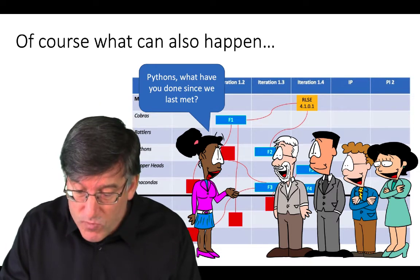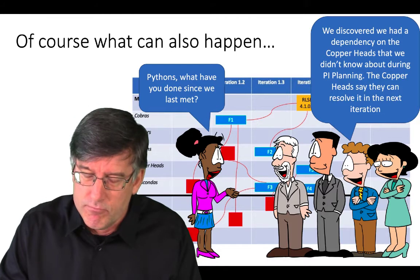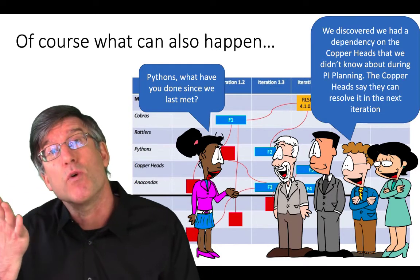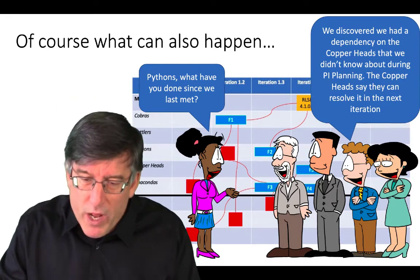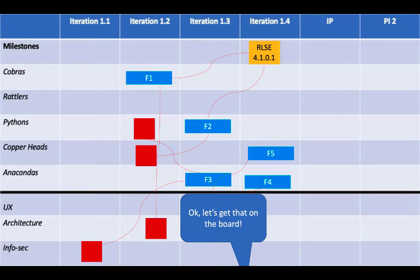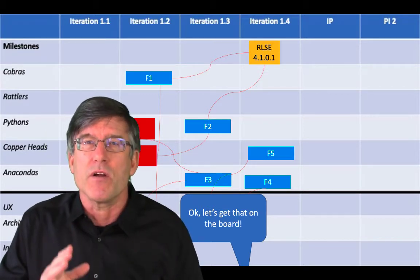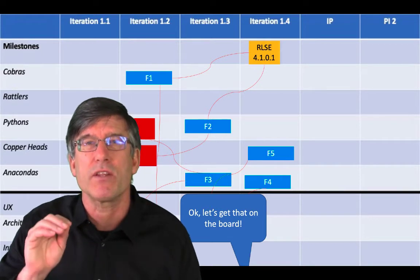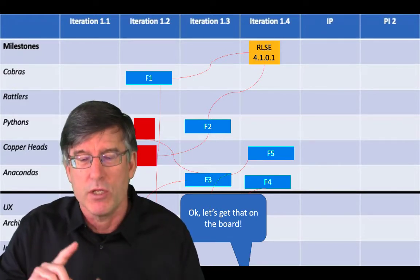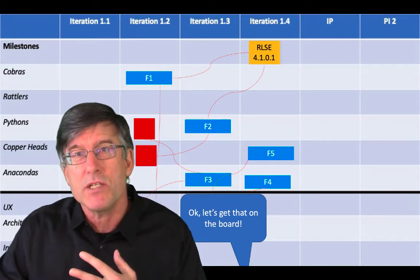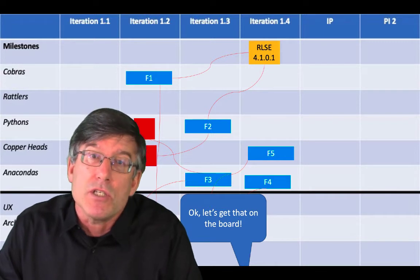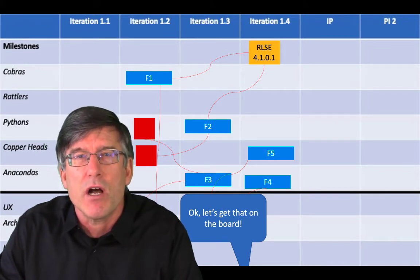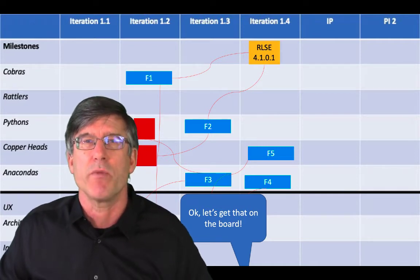What may also happen is we might discover that we have more dependencies. When a team says, hey, we've discovered a dependency that we didn't see during PI planning, we want to put it on the board. The program board is a living document — it's a big visible information radiator that tries to reflect the current state of all the milestones, features, and dependencies. If you discover new dependencies, you put them up on the board. The program board is not just a wall decoration; it is a supporting artifact with huge information on it.